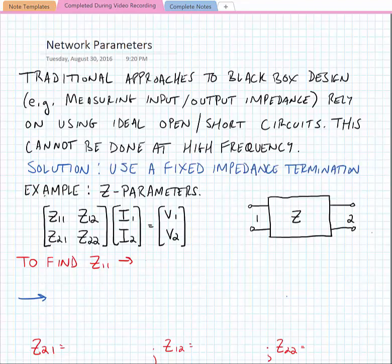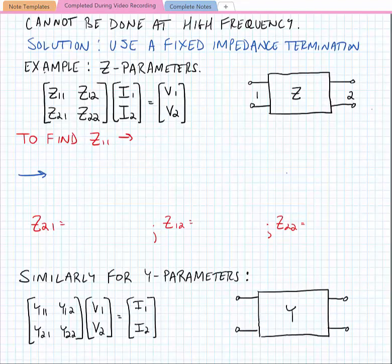Our solution is going to be to use a fixed impedance termination. Before we do that, let's examine the z-parameters to see what's wrong with our high frequency approach in using network parameters such as the z-parameters.